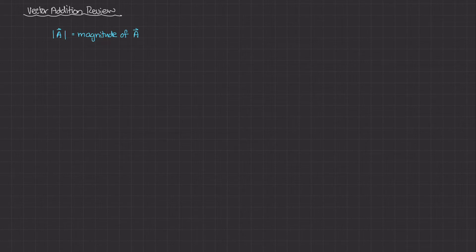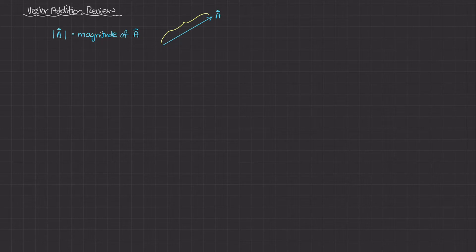The magnitude is the length of the vector. If I drew an arbitrary vector here and called it vector A, the magnitude of A is going to be the length of that vector. And because it's a length, the magnitude cannot be negative — the magnitude of A is never negative.